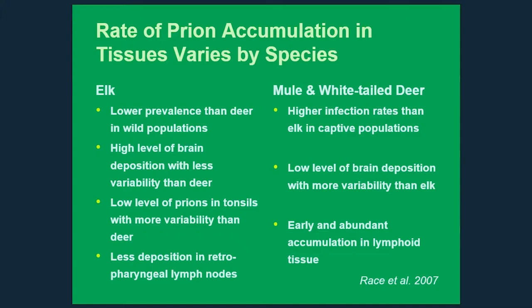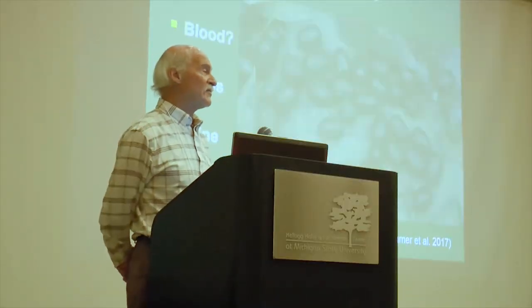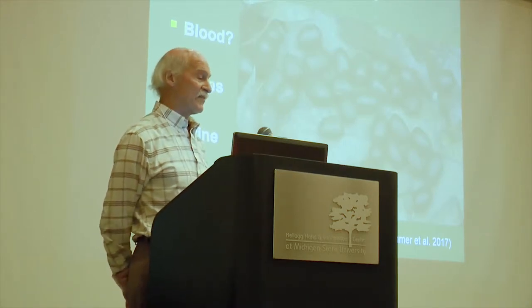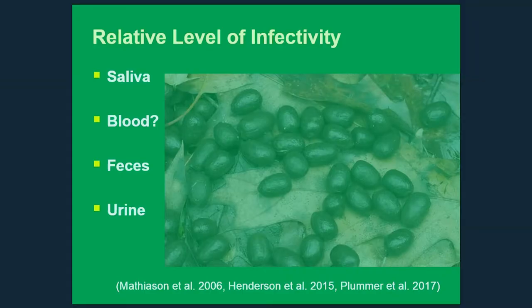Particularly in deer species, the lymph nodes are infected fairly early in the disease, and those are the tissues we typically use for detecting infected animals in a post-mortem sense. Elk seem to be a lot more variable — the lymph nodes don't seem to be infected as early. We think saliva and blood are probably near the top of the infectiousness hierarchy, though I'm not sure exactly where blood falls compared to saliva.